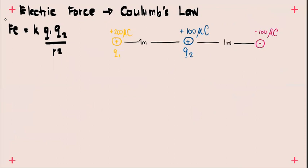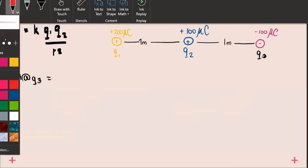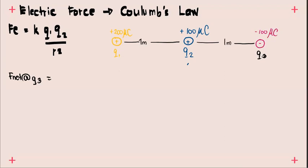For problem number 2, we add a third charge. This is charge number 3, Q3. They are all aligned on a horizontal plane. We need to find the net force at charge number 3. To do that, we need to know the effect of Q1 on Q3 and the effect of Q2 on Q3. Let's start with the interaction between Q2 and Q3. We notice they have different charges.